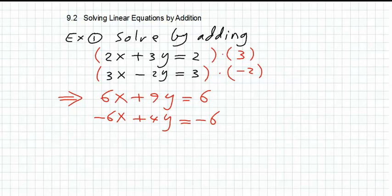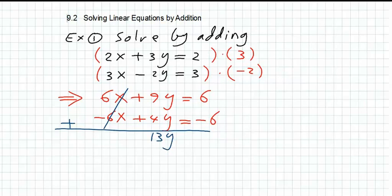Now we will add these two equations. If we add 6x to minus 6x, they will cancel each other and the answer is zero. 9y plus 4y will be 13y, equals 6 plus minus 6, which is zero. Now we can find easily the value of y.